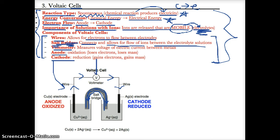Between the anode and cathode is the voltmeter, which measures the voltage of the electric current between the metals. Finally, there are the anode and the cathode. Based on 'anox and a red cat' and the oil rig rule, the anode is where oxidation occurs and where electrons are lost — and since you lose particles, you also lose mass.